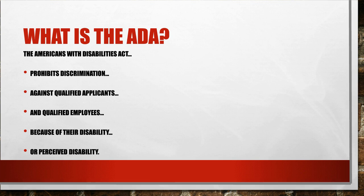So what is the ADA? It is the Americans with Disabilities Act. It's been around a long time — I believe it was passed in 1991, signed by the first President Bush. It prohibits discrimination. The ADA prohibits discrimination against the protected class — someone who is a qualified applicant or qualified employee — because of their disability or because of their perceived disability, and there's a lot in that definition.